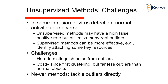The challenges we face while working with unsupervised methods are: in some intrusion or virus detection scenarios, normal activities are diverse. Unsupervised methods may have a high false positive rate but still miss many real outliers. A supervised method can be more effective, for example, identifying attacks on key resources. Other challenges are: it is hard to distinguish noise from outliers; clustering is costly but there are far fewer outliers than normal objects.